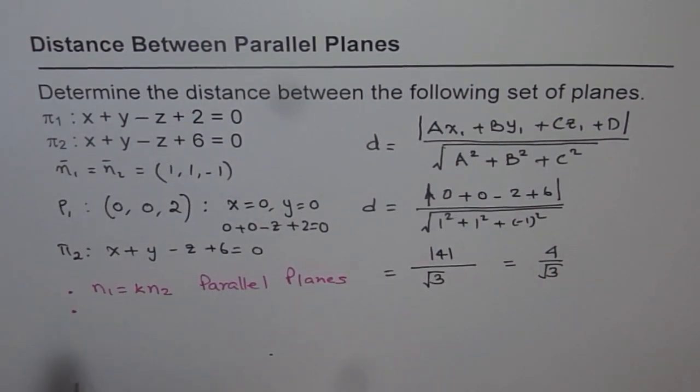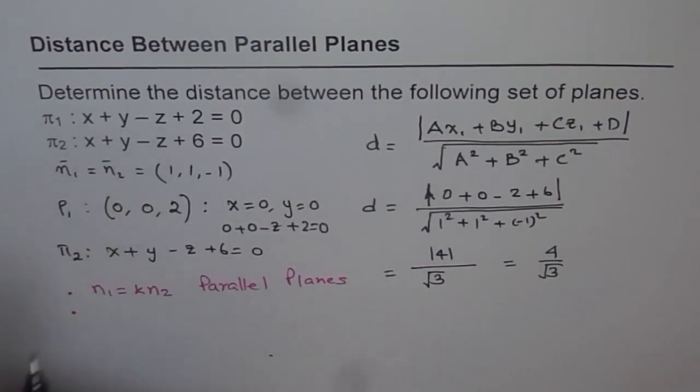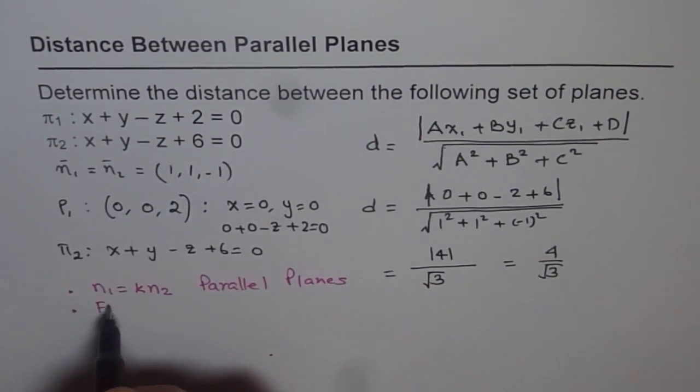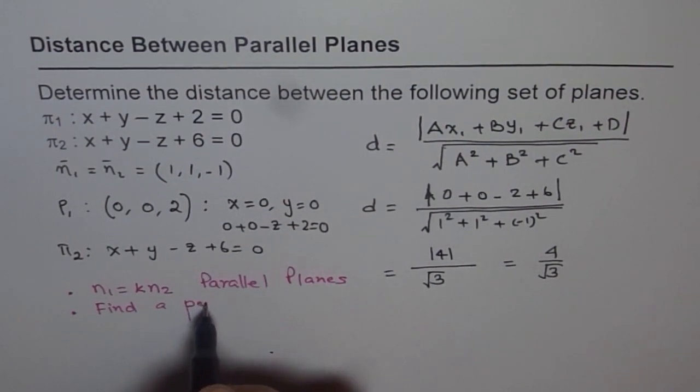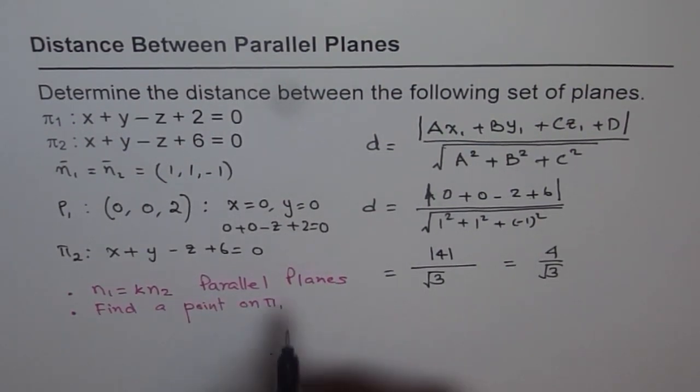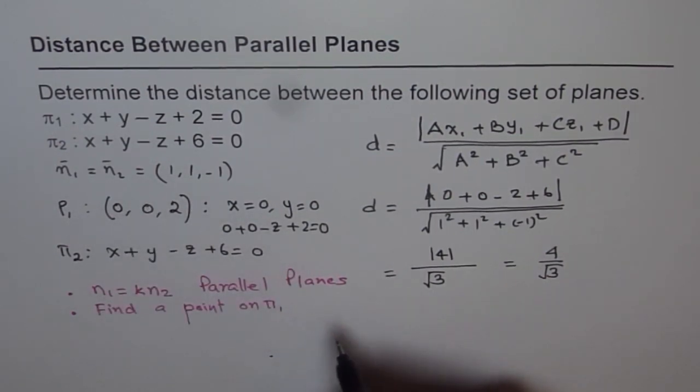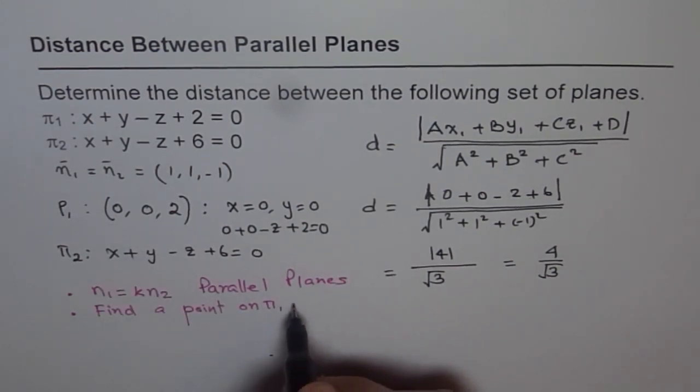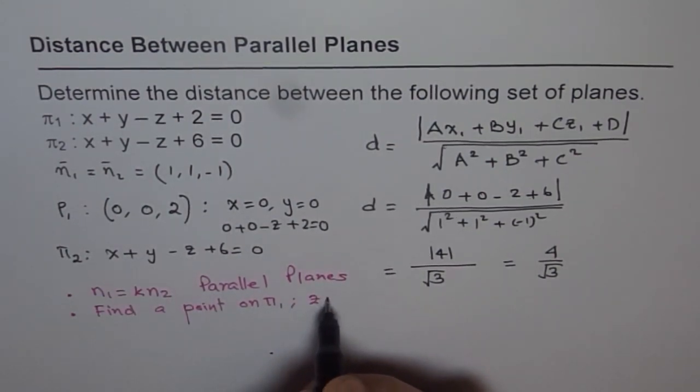Second step is find a point on the first plane. Best point to find is, for example, in this equation, z-intercept or x-intercept or y-intercept, because you get two zeros. My point will be z-intercept.